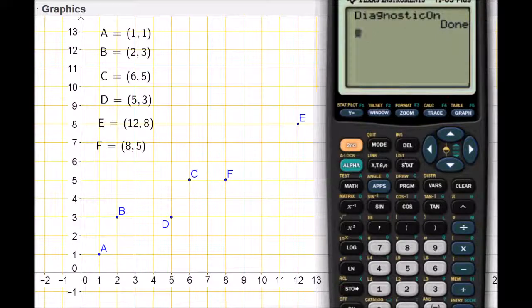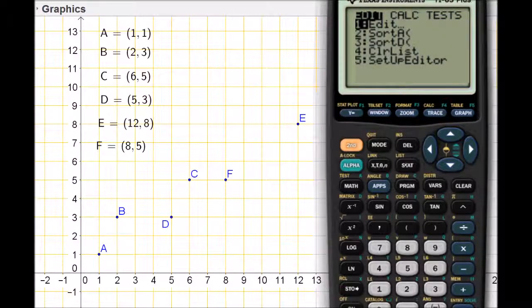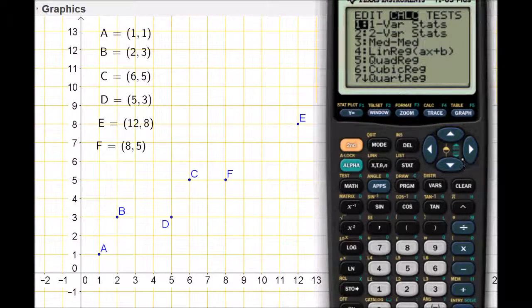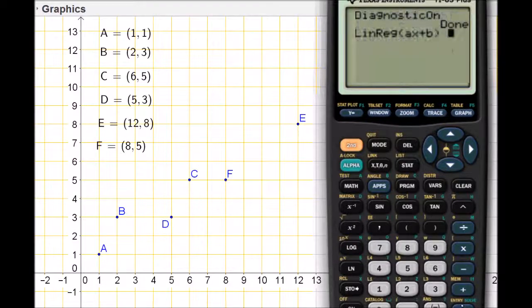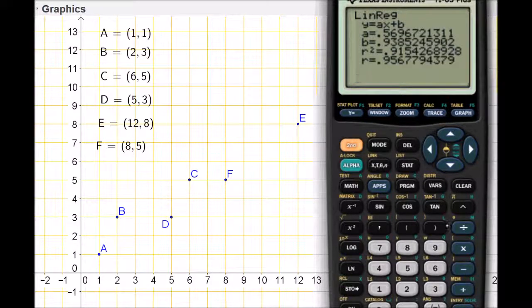So it's time to do that. Let's press statistics. We've already edited our data. Now we're going to calculate the line of best fit. I'm going to go over, and option number four says linear regression Ax plus B. That is a line, and it will be the line of best fit. When I come down to here and press enter, I'll press enter one more time, and I'm given all kinds of information.